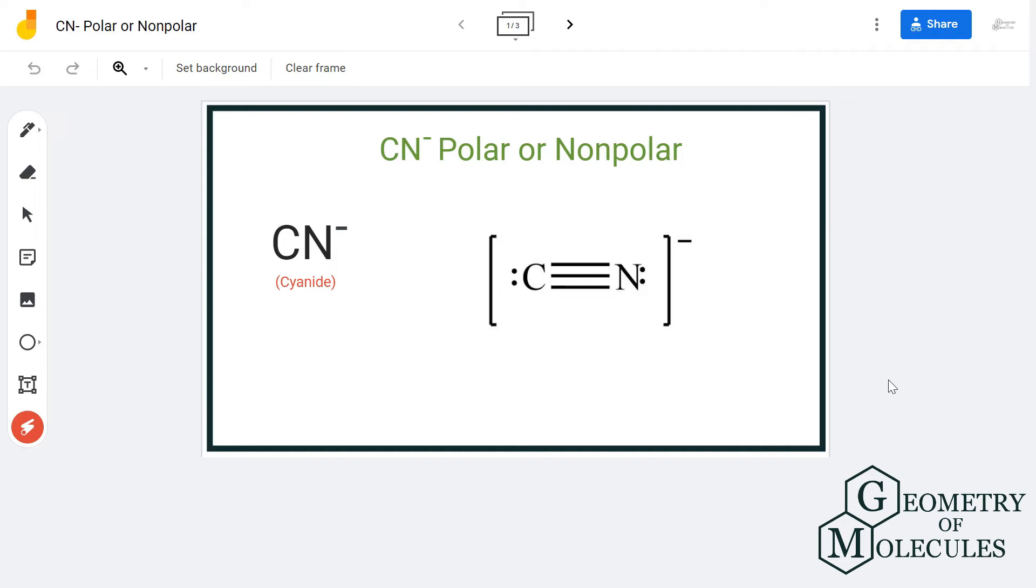Hi guys, in this video we are going to determine the polarity for cyanide ion, also known as cyanide anion. The chemical formula is CN minus. To determine its polarity, we will first look at its Lewis structure followed by its shape.